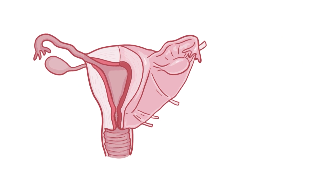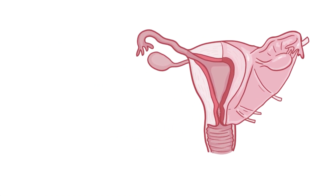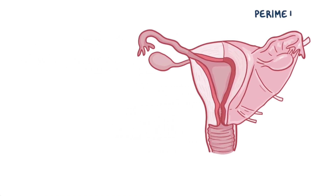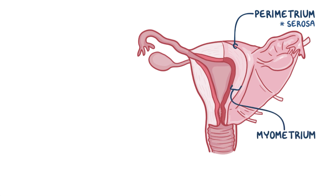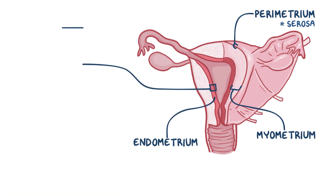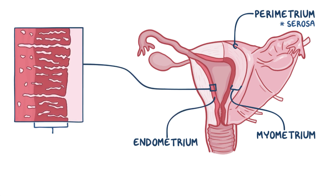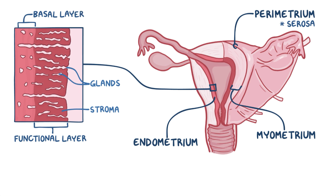The uterus consists of three layers: an outer thin layer called the parametrium, a middle smooth muscle layer called the myometrium, and the innermost layer, the endometrium. The endometrium has two layers: an inner functional layer made of mostly glands and supporting connective tissue called stroma, and an outer thin basal layer, which regenerates the overlying functional layer after each menstrual cycle.